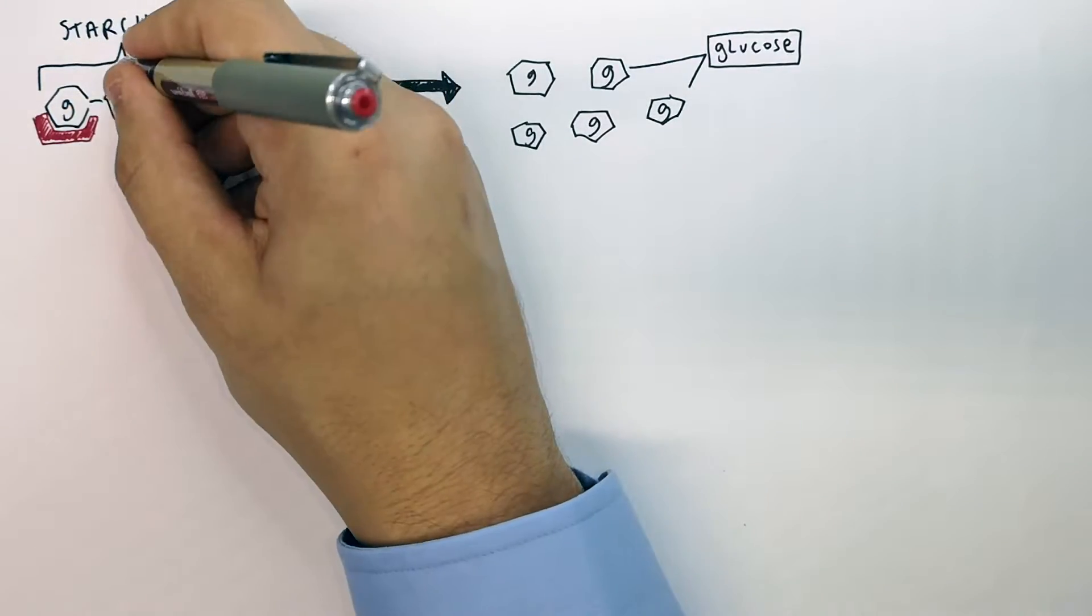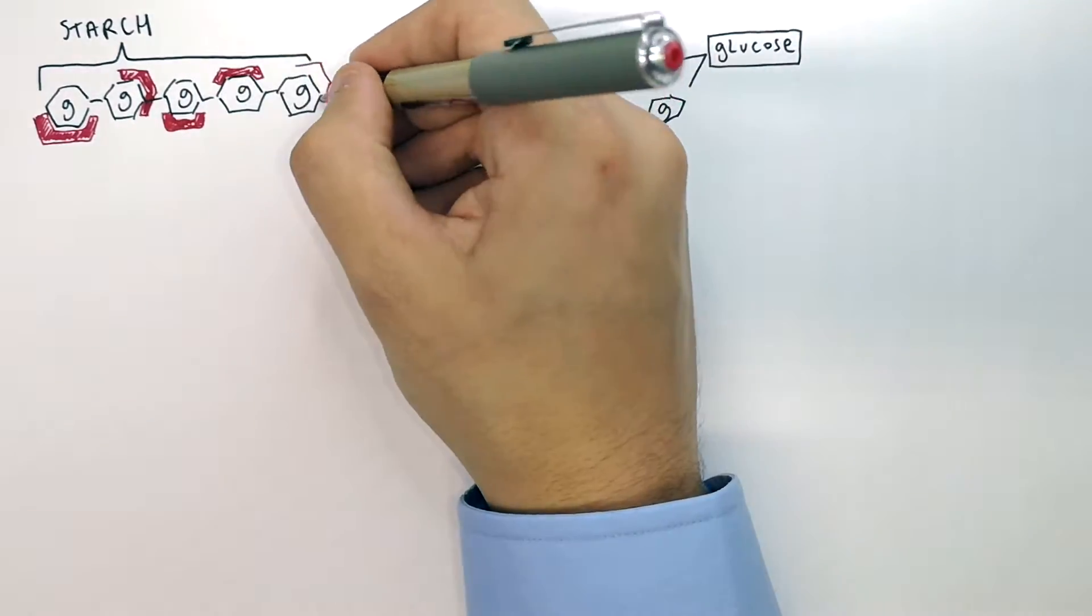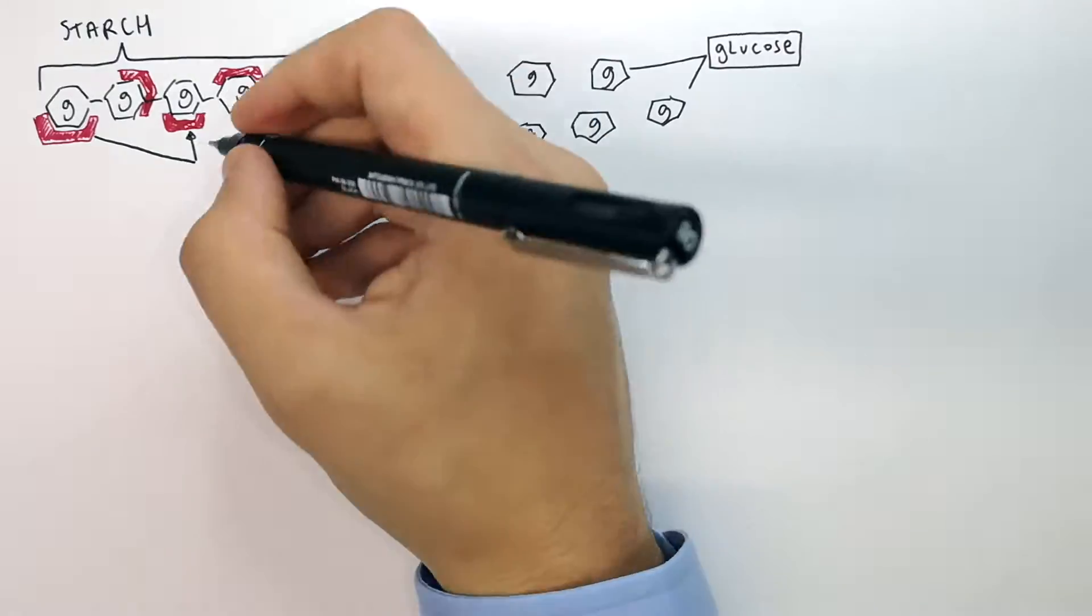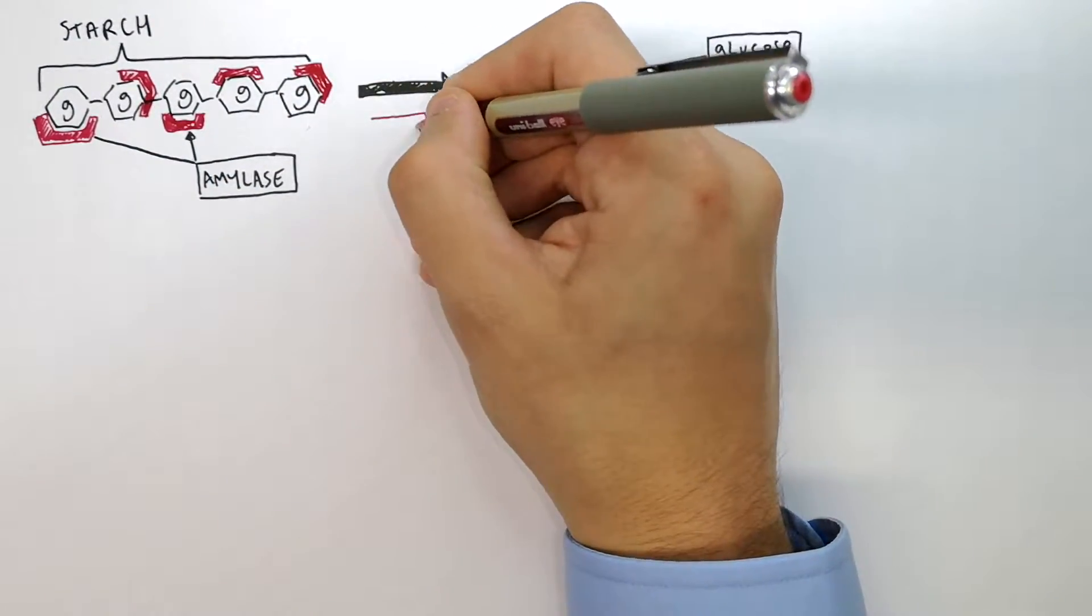It is the enzyme amylase that binds the substrate starch. Starch is the substrate and amylase is the enzyme. Amylase breaks down starch into glucose.